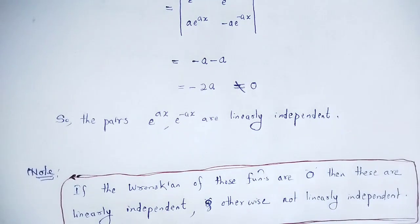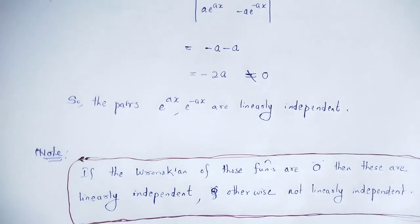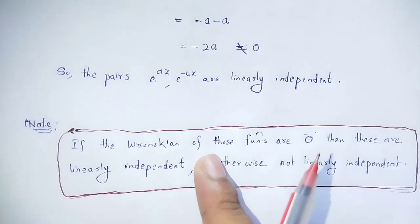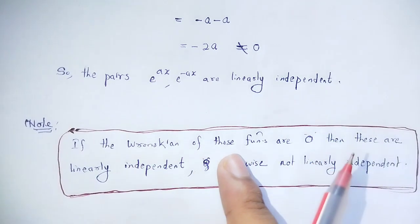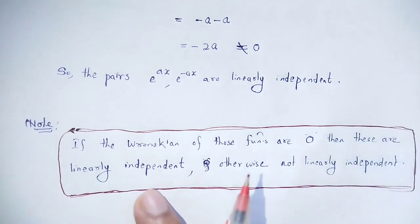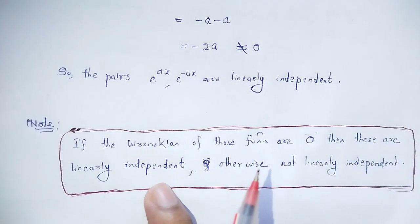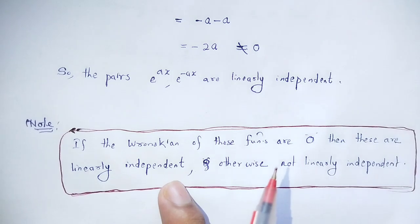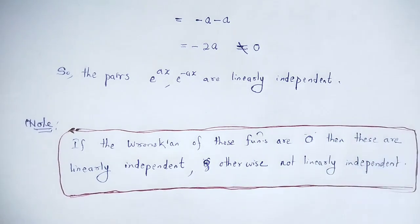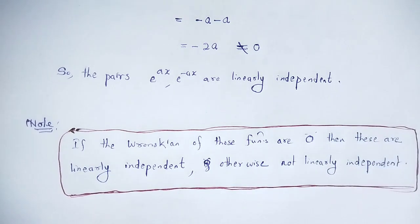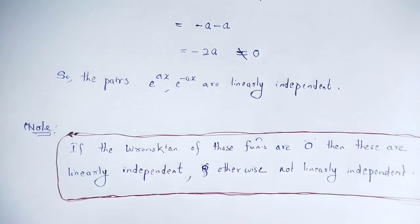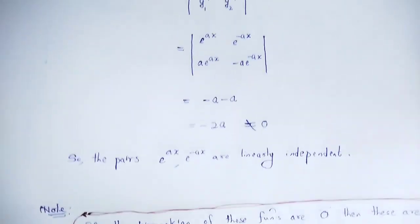Important note: if the Wronskian of those functions is zero, then they are linearly dependent. If the Wronskian is not zero — as in our example where W = -2 — then the functions are linearly independent.